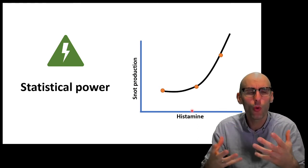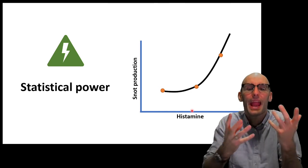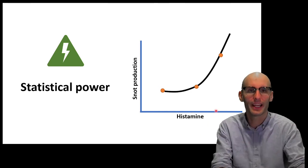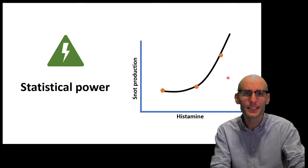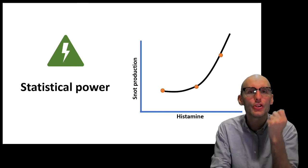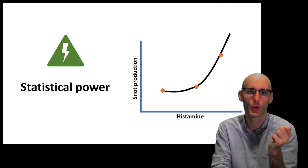But you could also run a bit more of a complicated statistical model, maybe a quadratic, which you could run through that. And that seems to go through all the dots. But I think we intuitively know with an n of 3, we don't really know which model to run. It could be a linear regression, or it could be the quadratic. We don't actually know the relationship between histamine and snot production. So, with an n of 3, we don't really know which statistical model. We don't have the statistical power to decide what statistical model we should put through that.